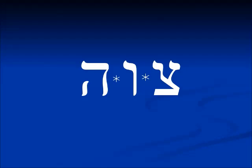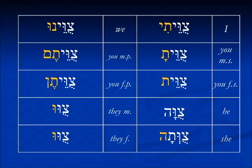It is difficult to find examples of these in scripture, so I have chosen the verb tzadi-vav-hei, tzavah or tzivah, which means 'to command.' You can recognize this root from the word mitzvah, which is a commandment. In the active voice it is a pi'el verb, but we're going to look at it in the pu'al form. We're looking at a verb that ends in hei, so in the perfect tense there will be changes — a yud will come in instead of the hei in some forms.